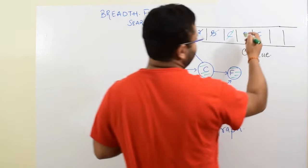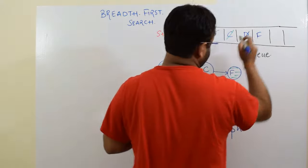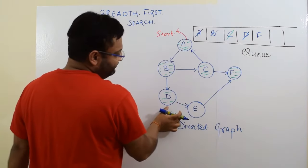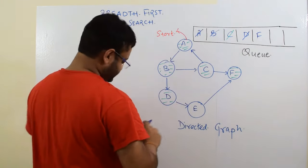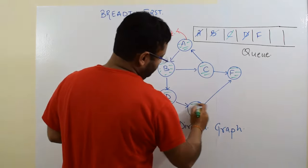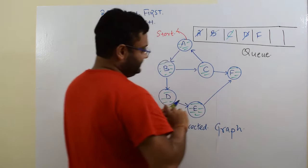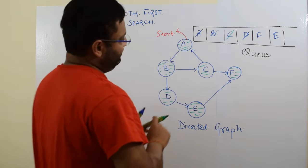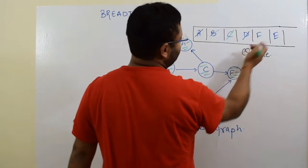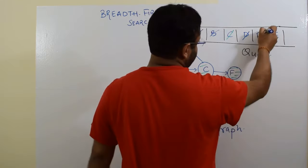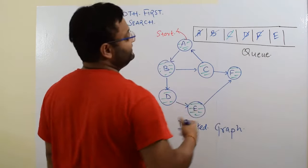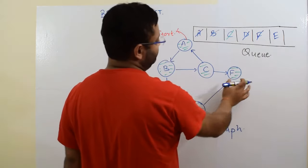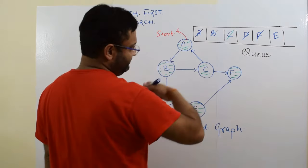Now you will dequeue D. The neighbor of D which has not yet been visited is only E. You mark E as visited and push it into the queue. Now which element will you dequeue? F. Any neighbor of F which has not yet been visited? No. From F you cannot go anywhere.